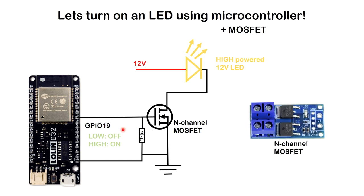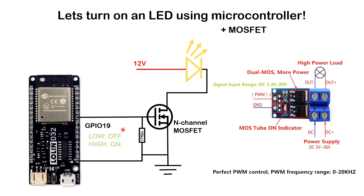I'm using an N-channel MOSFET module you can buy off AliExpress, eBay, or Amazon. The seller provides the circuitry — there is a ground and a PWM connection, which is what connects to GPIO 19. A pull-down resistor is already embedded, and there are dual MOSFETs so instead of one MOSFET there are two. This handles powering high-powered LEDs without getting hot.